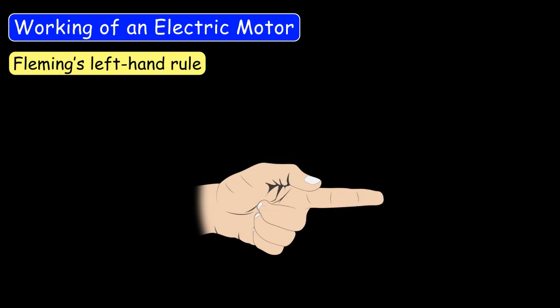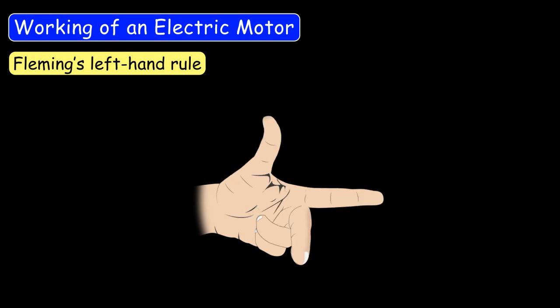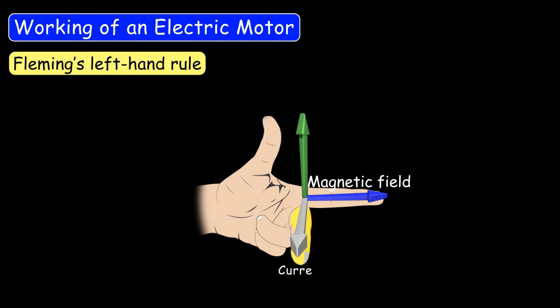Let's learn this left-hand rule. If we completely stretch the first finger, the second finger, and the thumb of our left hand such that the three fingers are mutually perpendicular to each other, and the direction of the magnetic field is represented by the first finger, the direction of the current is represented by the second finger, then the thumb represents the direction of the force experienced by the current-carrying conductor.